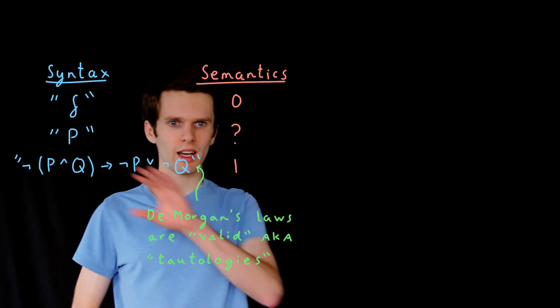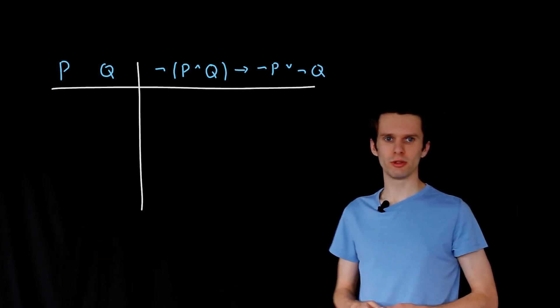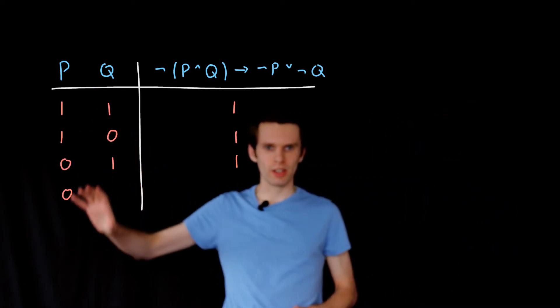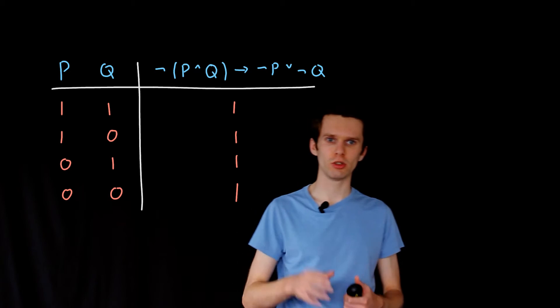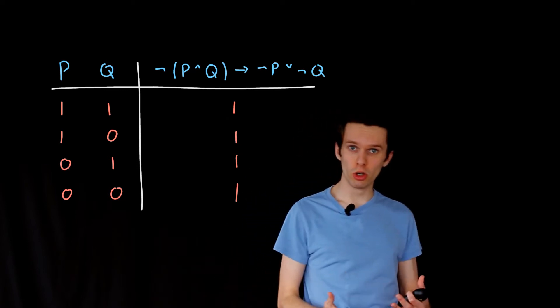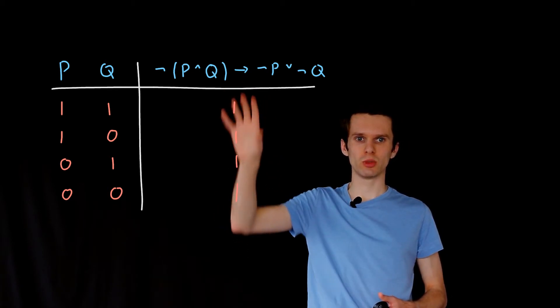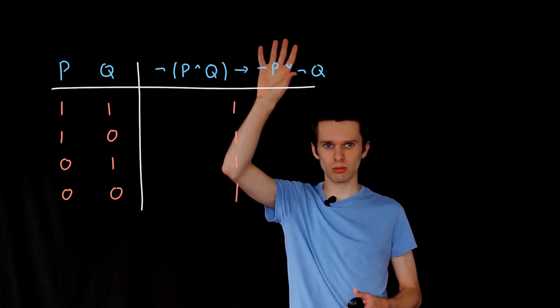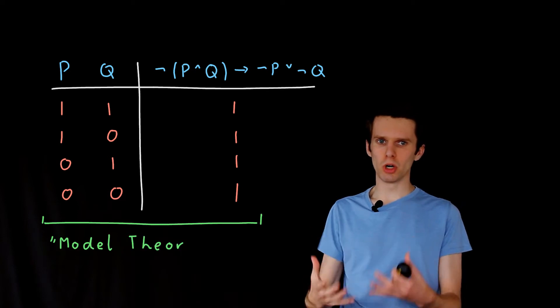So the question is: how do we know that this sentence is true? One way would be to draw out a truth table. On the left-hand side we have all possible truth values of the symbols P and Q used in this sentence. Using the laws from the semantics video, we find that every one of these possibilities is one — the sentence is valid, it is a tautology. This method is known as model theory.